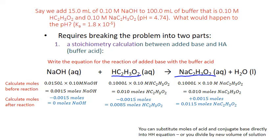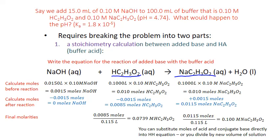It turns out you can substitute moles directly into the Henderson-Hasselbalch equation. While it's formulated for molarity, when we calculate the actual new molarities, the volumes cancel out in the ratio. We had 100 milliliters of buffer plus 15 milliliters of base, giving 115 milliliters or 0.115 liters total. Dividing the new moles by this volume gives the new molarities for acetic acid and sodium acetate, which we can substitute into Henderson-Hasselbalch to calculate the new pH.